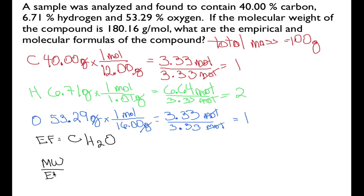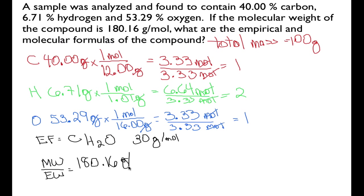The empirical formula weight we can calculate from the periodic table. The empirical formula weight for CH₂O is 30 grams per mole — that's the weight of one carbon, two hydrogens, and one oxygen. We were given a molecular weight of 180.16 grams per mole. Dividing 180.16 by 30, our units cancel and we get 6.